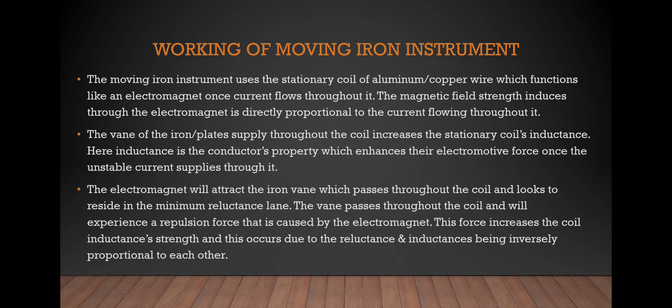The moving iron instrument uses the stationary coil of aluminum copper wire. It functions like an electromagnet. The current flows throughout it. The magnetic field strength induces. The electromagnet is directly proportional to the current flowing throughout it.